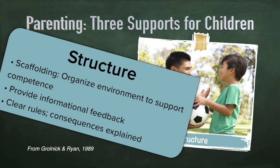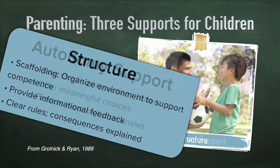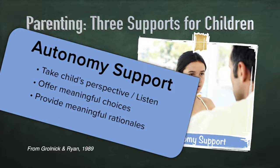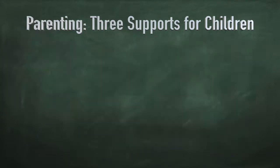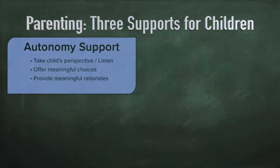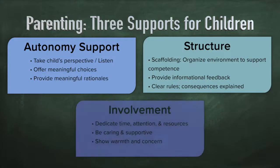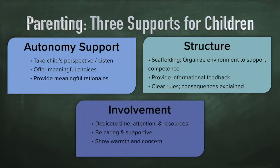Most important in self-determination theory is that parents are also autonomy supportive. They understand the child's perspective, listen to the child's point of view on different problems, and where they can, they offer choices about how to go about doing things and support the child's initiative. When they must demand something, they supply a meaningful rationale and are empathic in their limit setting. These three things — autonomy support, structure, and involvement — have been validated across many studies as really important to children's well-being and satisfaction of basic psychological needs.